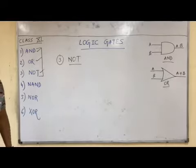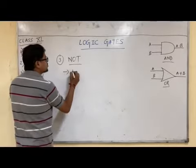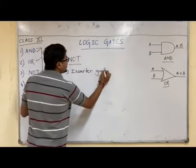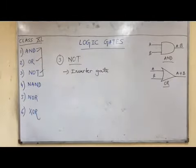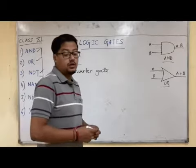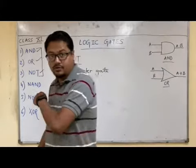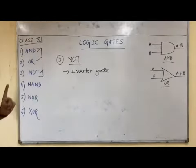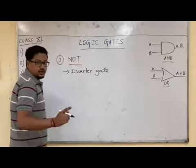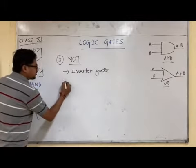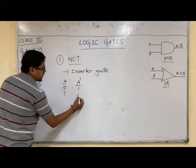Let us discuss the third gate: NOT. NOT, as you know, reverses the input. In the context of gates it is also called the inverter gate — whatever input it receives, it inverts and gives as output. One special thing: AND and OR can work on multiple variables, but the NOT operator will only ever work on a single variable. Truth table: input 0 gives output 1, input 1 gives output 0.